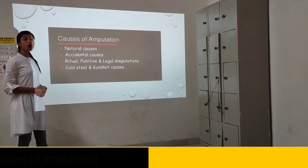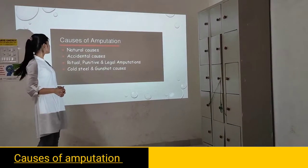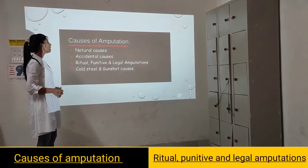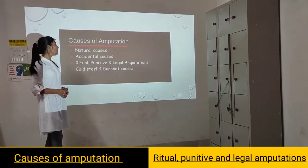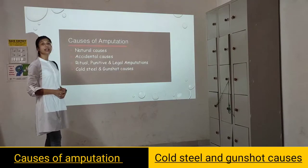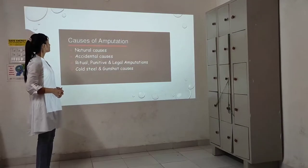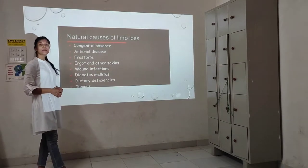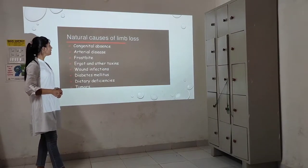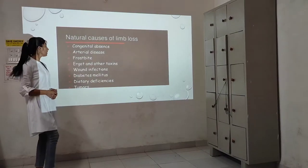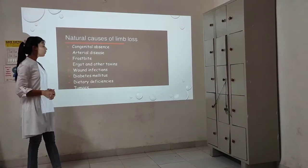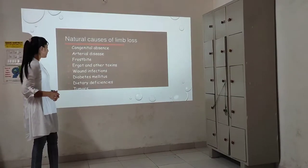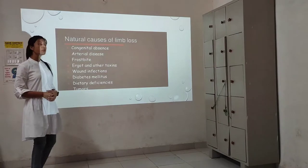The causes of amputation include: natural causes — congenital absence of the limb, arterial disease, frostbite, ergot and other toxins, blood infections, diabetic maladies, diabetic heart deficiencies, and tumors. Accidental causes include falls when running or from a height, crushing by trees, savaging by crocodiles and sharks, and effects of earthquakes, tsunamis and violent storms.